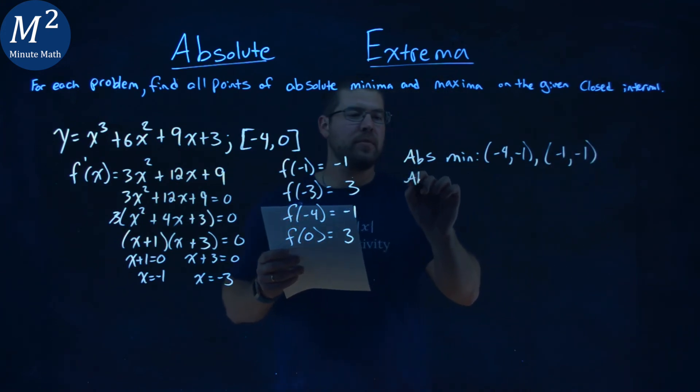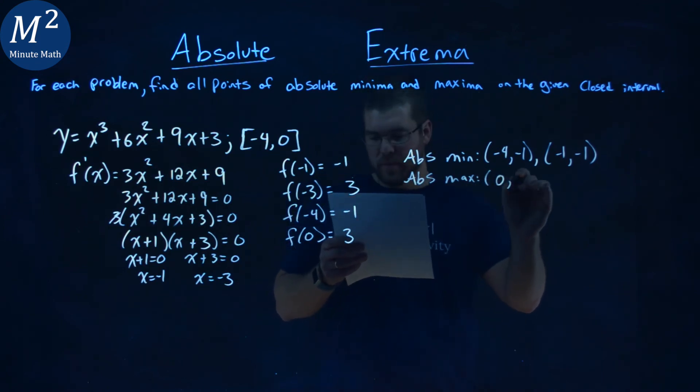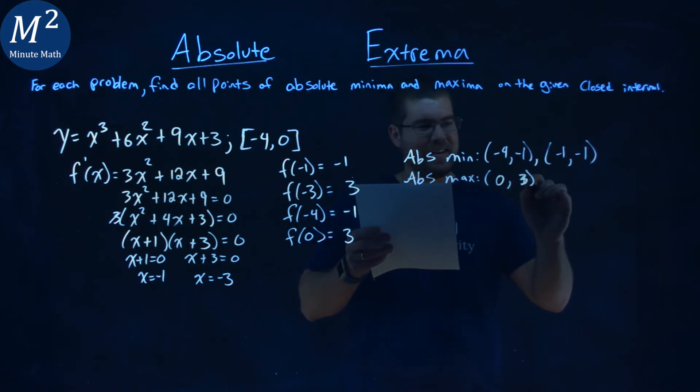Our absolute maximum has the two points of 0, 3. That's a 3. And negative 3, positive 3.